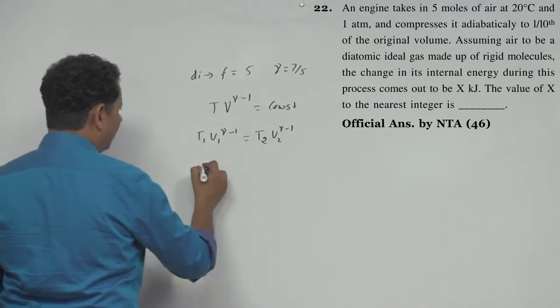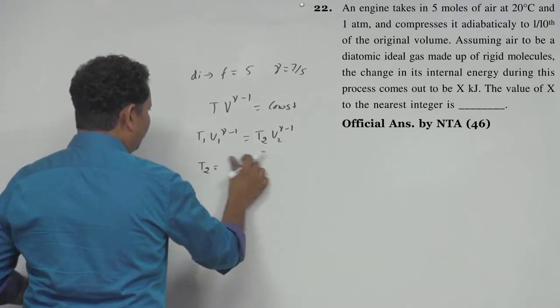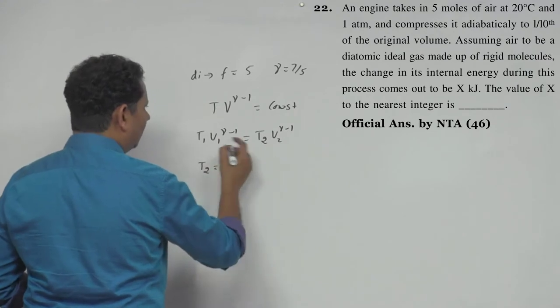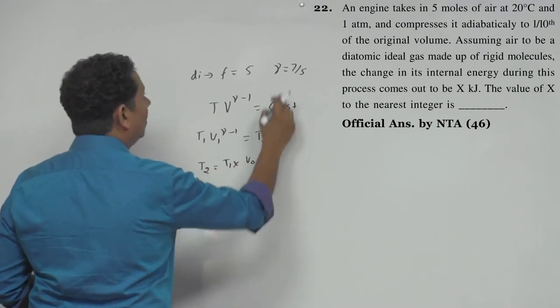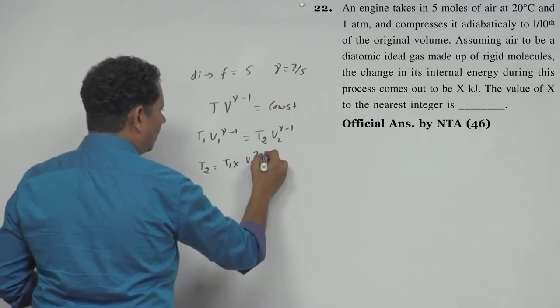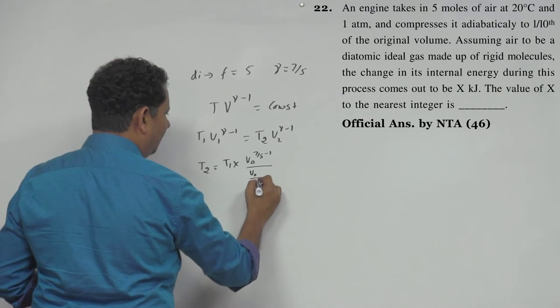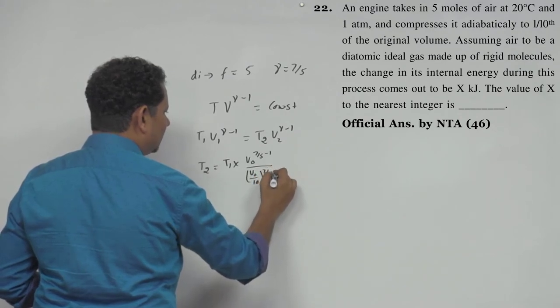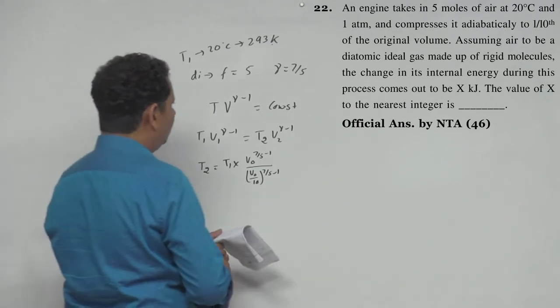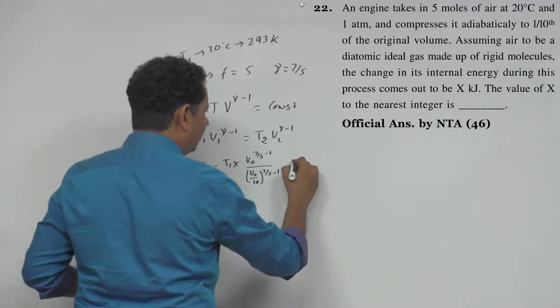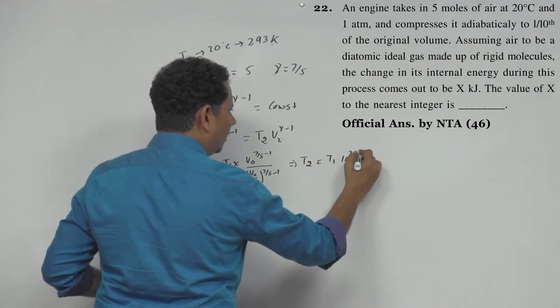We can write T2 = T1 multiplied by (V1/V2)^(gamma-1). Gamma is 7/5, so this becomes T1 × (V/(V/10))^(7/5-1) = T1 × (10)^(2/5). Solving this gives us T2 = T1 × 10^(2/5).